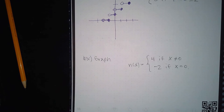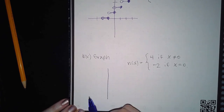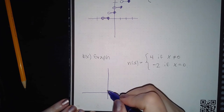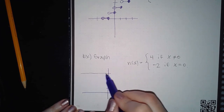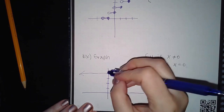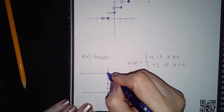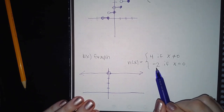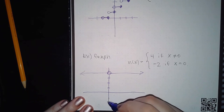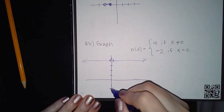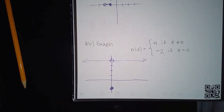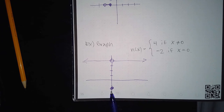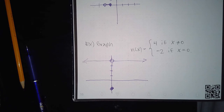This next example is similar, but this one says the graph of y equals 4 everywhere except at 0. So I will have the horizontal line going all the way from the left to the right, but at 0 there is a hole. Then it tells me that at x equals 0, the y value is negative 2 — that's down here. Since it's equal, I'm going to have a solid dot at negative 2. So you have this whole line with a hole in the middle, and then the function actually has a point down at negative 2.